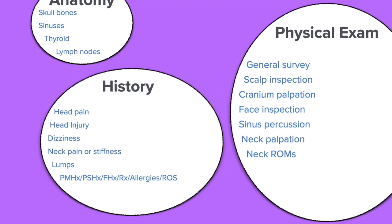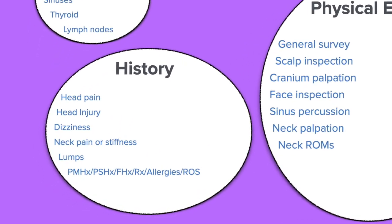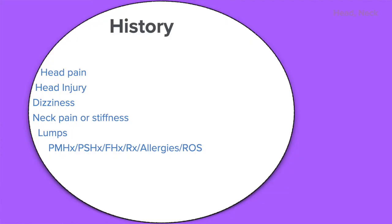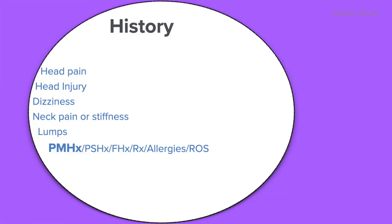Now let's talk about history and what subjective data you need to gather about this body system. For the head and neck history, as with every body system, you're going to be asking about the past medical history — any serious medical history such as cancer, heart disease, pneumonias, as well as chronic things like asthma or thyroid.